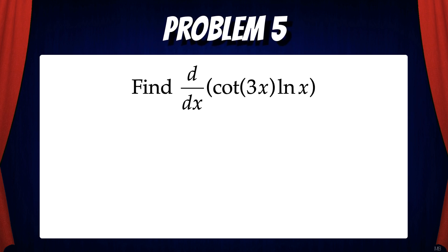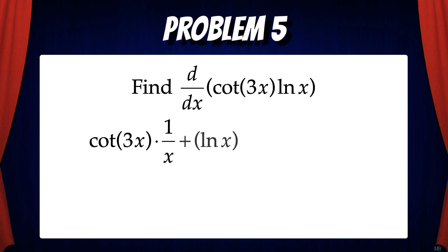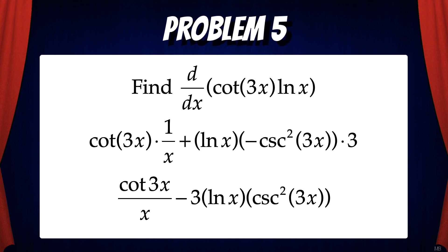Let's do one last example. Find the derivative of cotan(3x) times ln(x). The first thing to note is we have a product of functions, which means we have to use the product rule along with trig rules and the chain rule. With the product rule, we have left·d(right) plus right·d(left). The left function is cotan(3x) and the derivative of the right function ln(x) is 1/x. Then we add the right function ln(x) times the derivative of cotan(3x), which is negative cosecant squared(3x) times 3 because of the chain rule. Cleaning this up gives us cotan(3x)/x minus 3·ln(x)·cosecant squared(3x), and that's the derivative.